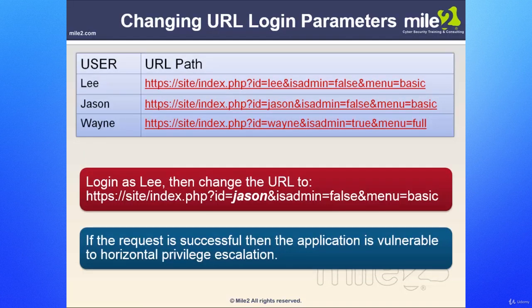We can change URL login parameters. For instance, we have Lee, Jason, and Wayne: Lee as admin equals false, Jason as admin equals false, and Wayne as admin equals true — only one true admin. There's also a menu parameter set to basic or full. If you log in as Lee with limited access and change the URL to Jason as admin equals false and the request is successful, then the application is vulnerable to what we call horizontal privilege escalation.